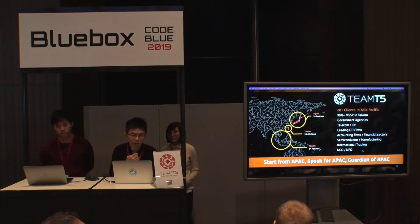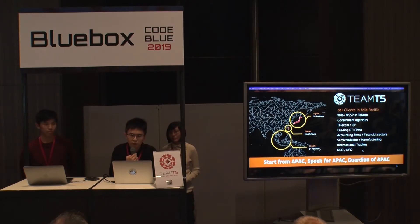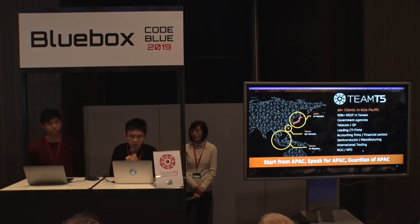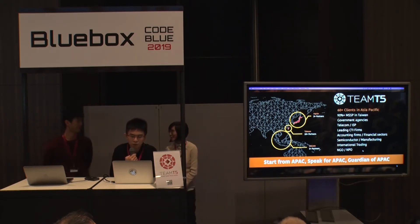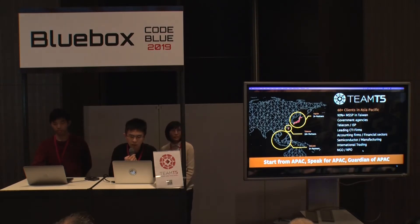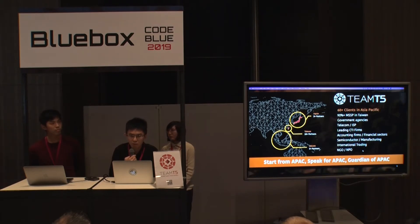We are from Team T5. Team T5 is a threat intelligence company based in Taiwan. We have more than 60 clients in the Asia Pacific region, including MSPs, government, telecom, cyber threat intelligence firms, accounting, semiconductor, and international trading companies. Compared with other US vendors, the most unique part of Team T5 is that we start from APAC and we speak for APAC. We believe we are guardians of APAC and are very confident about our threat visibility in this region. Team T5 is interested in tracking cyber threat actors around the world.